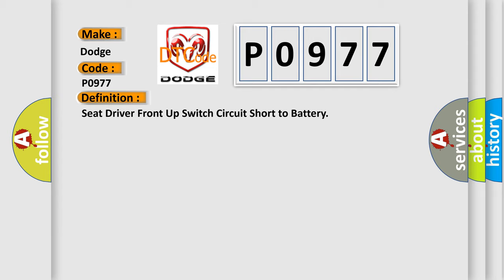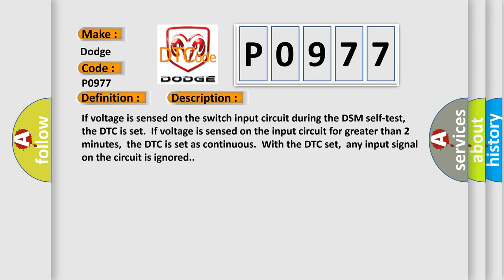And now this is a short description of this DTC code. If voltage is sensed on the switch input circuit during the DSM self-test, the DTC is set. If voltage is sensed on the input circuit for greater than two minutes, the DTC is set as continuous. With the DTC set, any input signal on the circuit is ignored.